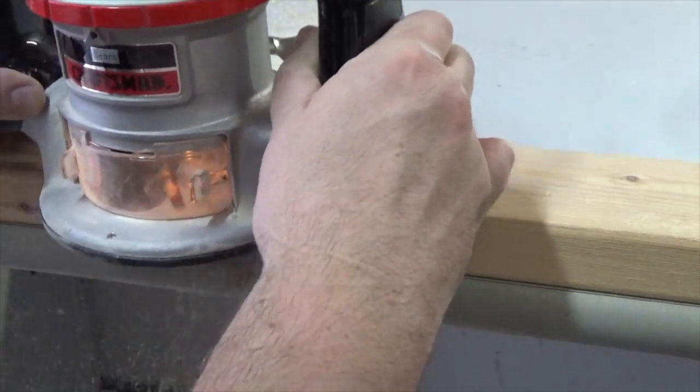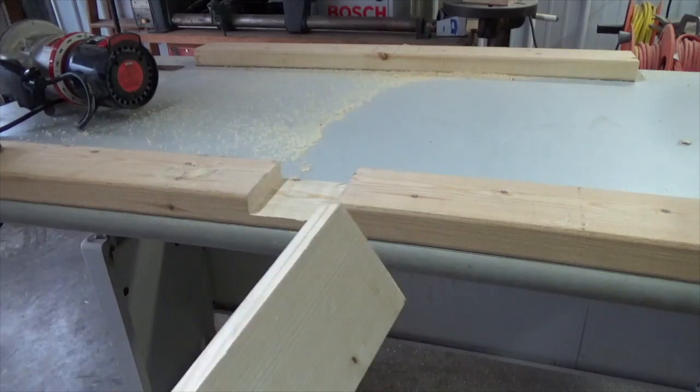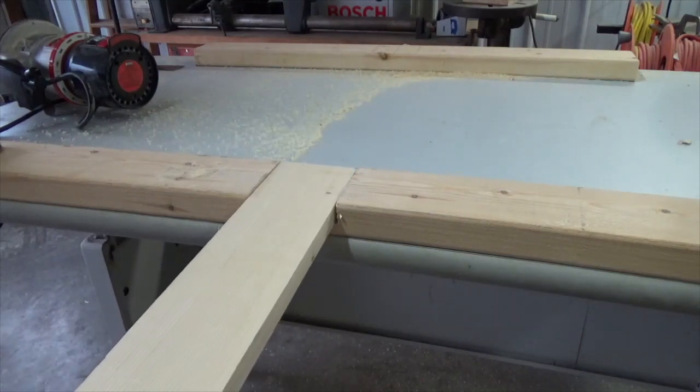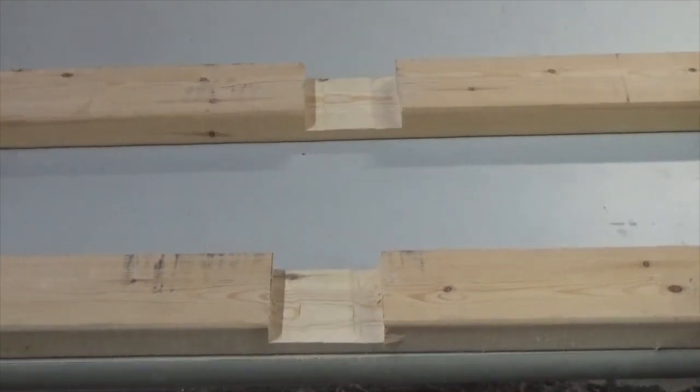Dress the chipped area smooth by using a router. Then test by fitting the 1x4 snug into place. Repeat this process on the second 2x4.